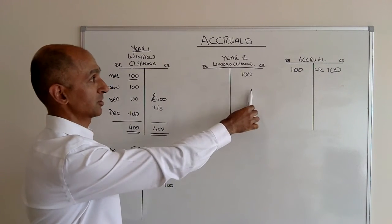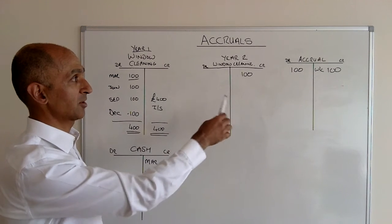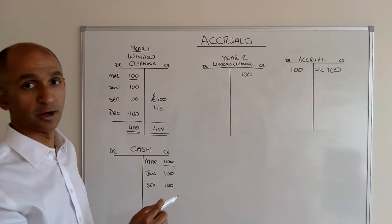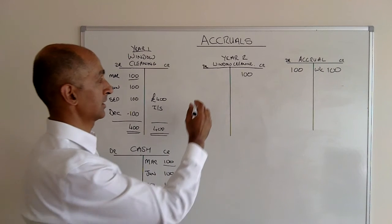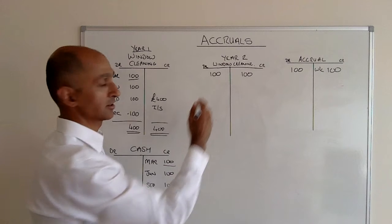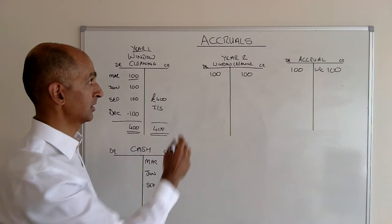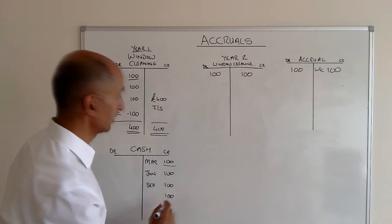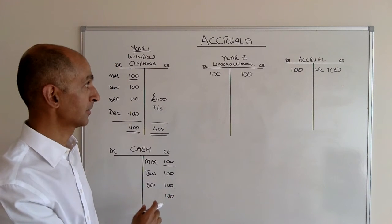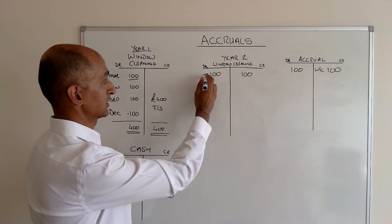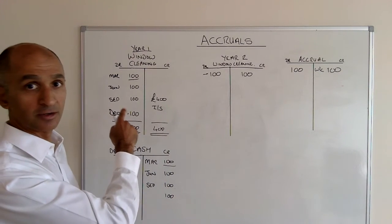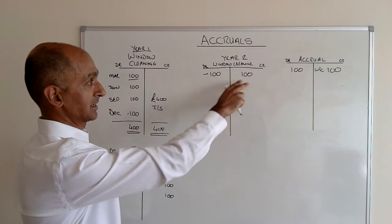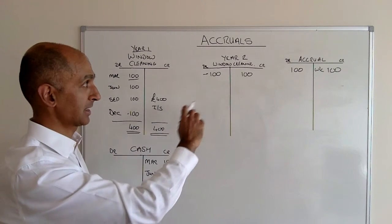Normally expenses are a debit, so this credit is actually going to reduce our expenses — we now have a credit expense of 100. The company that cleaned the windows comes along and says here's the bill we should have given you last year. So you debit window cleaning and credit the bank as normal — that's the money going out. That payment was then in relation to work for the previous year, so the balance of that account is actually zero now because both of those cancel each other out.